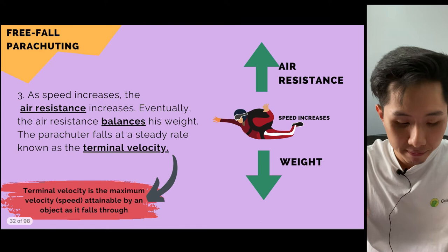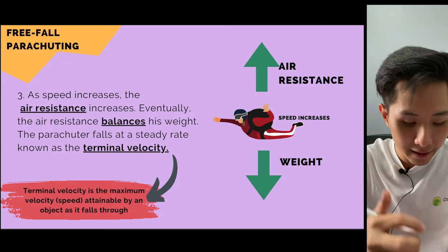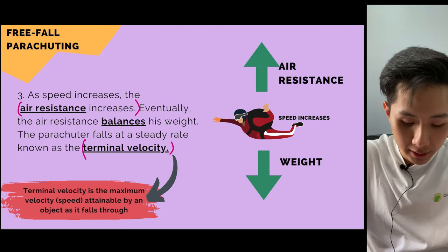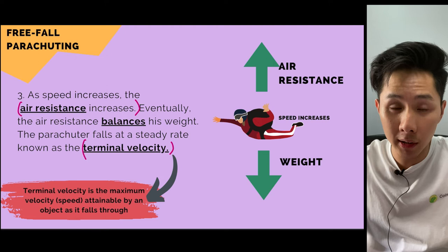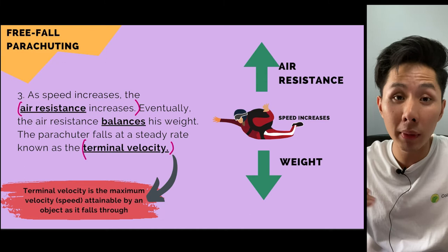Because speed increases, air collides with the parachute faster, so air resistance increases. At the point when air resistance equals the weight of the parachute, there is no resultant force. The parachute won't stop, but it maintains its maximum speed — this is terminal velocity: the maximum velocity attainable by an object as it falls through air.